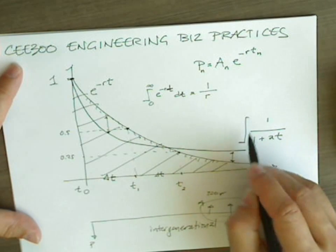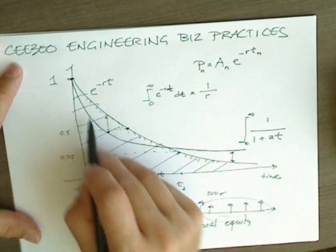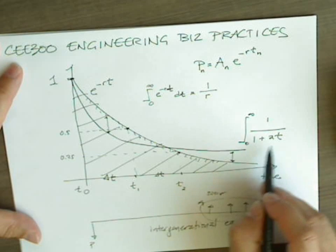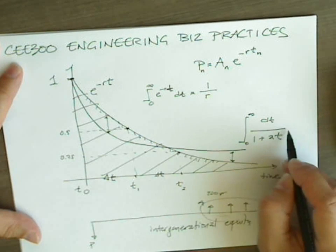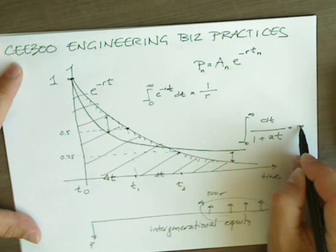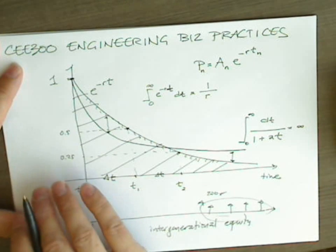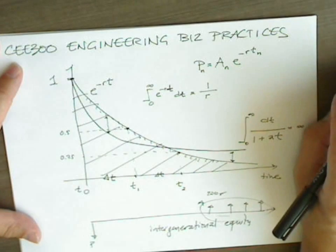Well, it turns out if we integrate the hyperbolic discount factor formula from, again, zero to infinity. This time we get infinity. I'll discuss the implications of that in the next video.